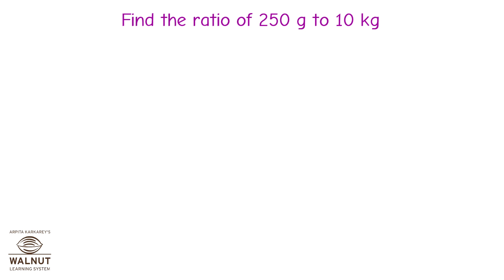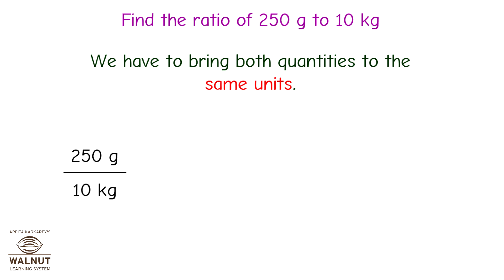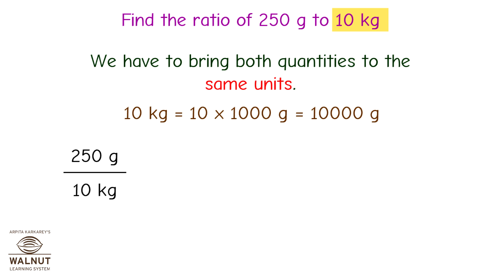Find the ratio of 250 grams to 10 kgs. Both quantities are of the same kind, but their units are different. We have to bring both quantities to the same units. Here, we convert the kilograms into grams: 10 kgs is equal to 10 into 1000 grams, equal to 10,000 grams. Now the units are the same, so we can find the ratio.